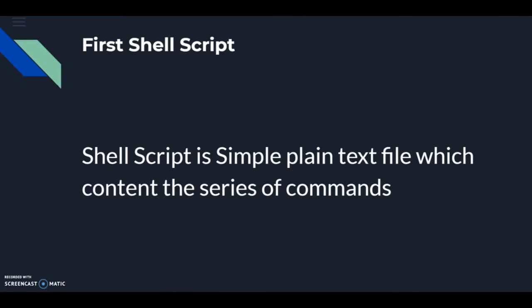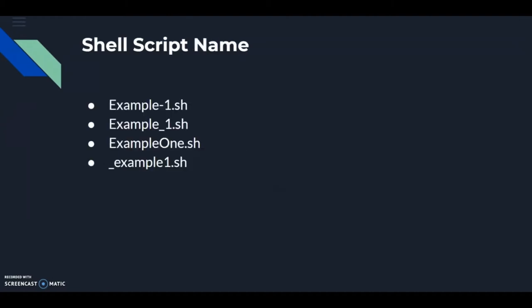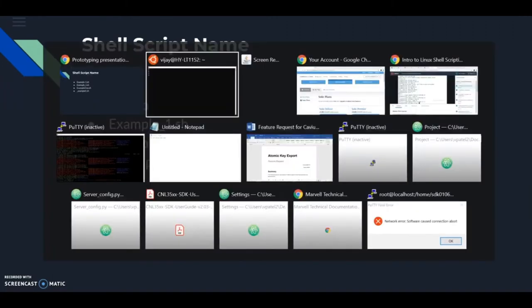A shell script is a simple plain text file containing a series of commands. You combine all commands you would run manually on the terminal into a simple text file. Valid script name examples include: example-1.sh, example_1.sh, or example1. Let's go to the terminal and create our first shell script.